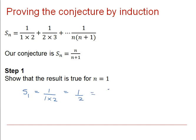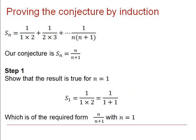S1 will equal 1 over 1 times 2, in other words, just that first term. We know that's a half. And we can write it in this form, 1 over 1 plus 1, which is equivalent to n over n plus 1 when n equals 1. Therefore, we've checked that the result is true for n equals 1. This is the completion of step one of our proof by induction.